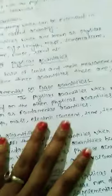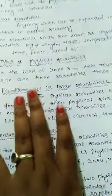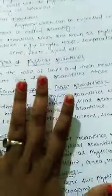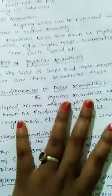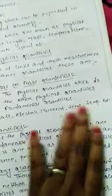Examples of fundamental or base quantities are: length, mass, electric current, time, temperature, etc.